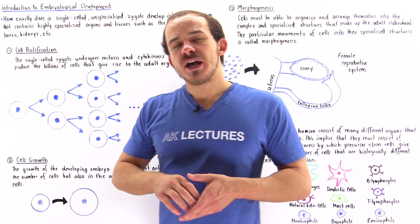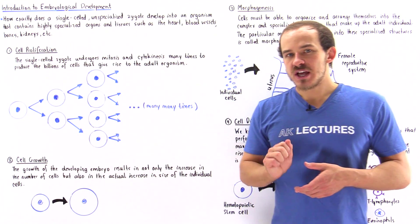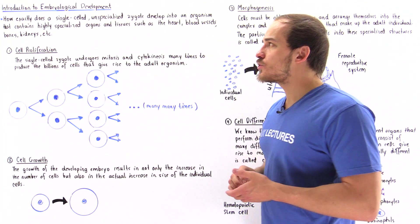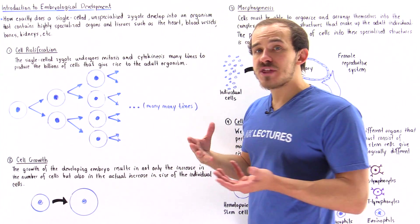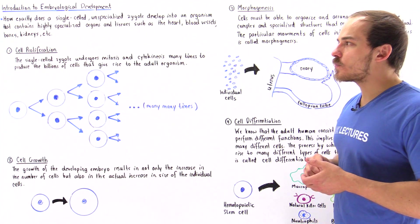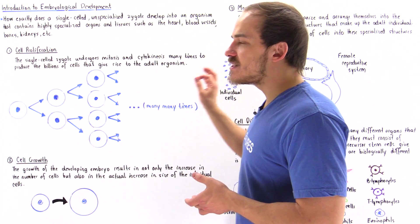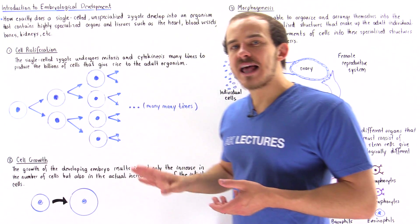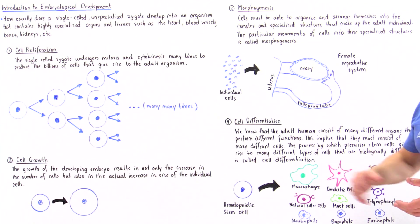As it turns out, there are four individual processes that have to work together for embryological development to actually take place the way that it does in our body. These four processes include cell proliferation, cell growth, cell differentiation, and morphogenesis.